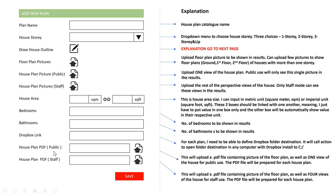There is also a house plan PDF for public — I will upload a PDF containing a picture of the floor plan as well as one view of the house for public use. This PDF will be used to send emails or print. There is also a house plan PDF for staff, which will probably be two to three pages in one PDF file. When I press email, it will send this PDF to my client.